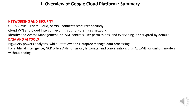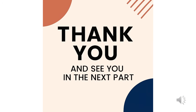GCP's Virtual Private Cloud, or VPC, connects resources securely. Cloud VPN and Cloud Interconnect link your on-premises network. Identity and Access Management, or IAM, controls user permissions, and everything is encrypted by default. BigQuery powers analytics, while Dataflow and Dataproc manage data processing. For artificial intelligence, GCP offers APIs for vision, language, and conversation, plus AutoML for custom models without coding. Thank you and see you in the next part — please subscribe to our YouTube channel and check out our website for the latest real exam questions and answers.